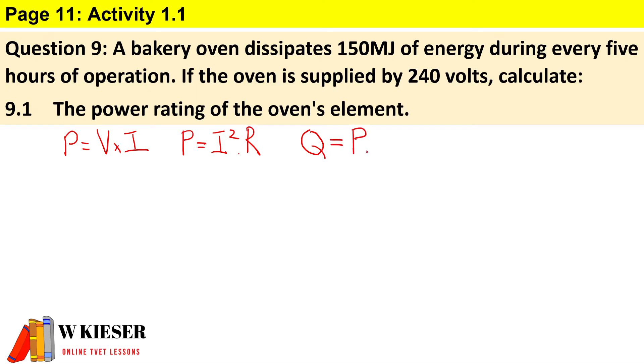Power will equal the heat generated in the circuit divided by the time that the oven is operating. So the heat generated: 150 megajoules times 10 to the power of 6 to convert to joules, and our time is 18,000 seconds. Therefore, the power